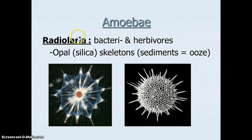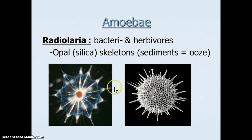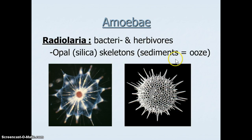Another amoeba called radiolaria makes opal — a skeleton made of silicon, just like diatoms do. These are the heterotrophic counterparts to some phytoplankton, and they eat some of the phytoplankton. They make these shells and stick out their gooey tentacles in amoeba form to grab things. They can also sink to form silica-based sediments — what we'd call silica ooze.